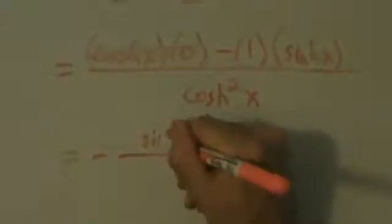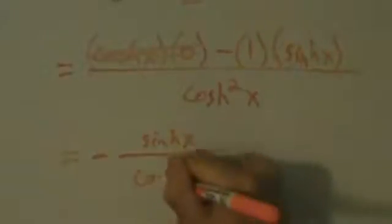So that's what we've got so far. Now let's simplify this. Cosh of x times 0, that just zeros out, so there's nothing left there. Then we have negative 1 times sinh of x. So this equals negative sinh of x over cosh squared of x.